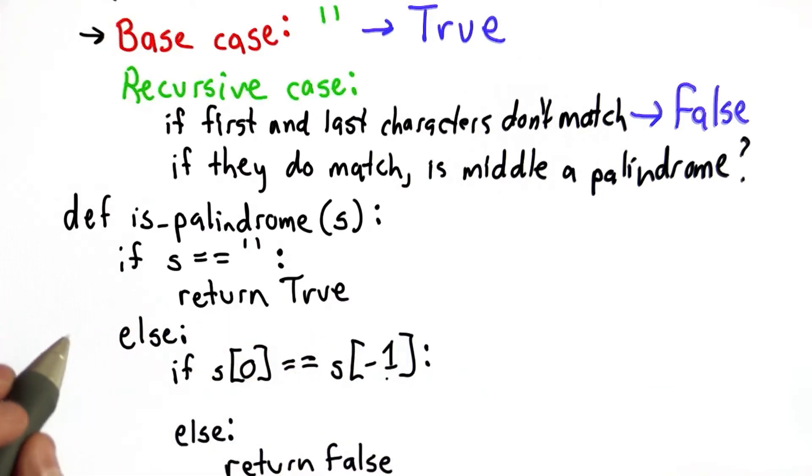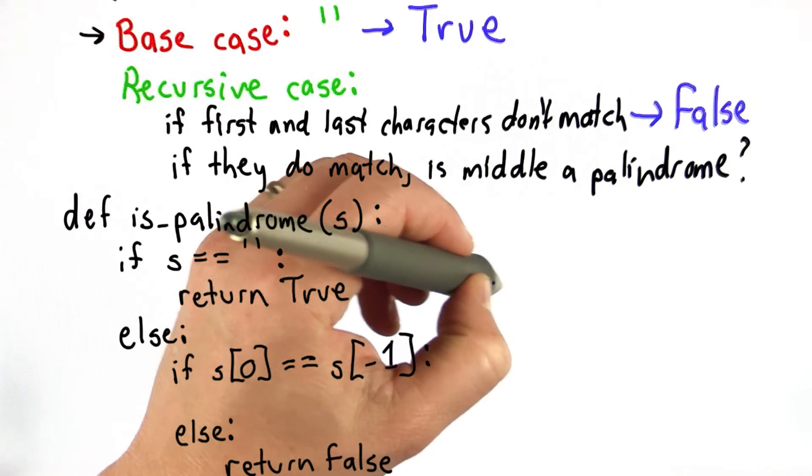If they did match, well, then we have the harder problem. We need to do the recursive call to check all the other letters in the string still form a palindrome. So this was our starting string.